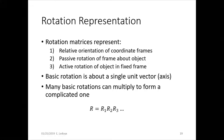Rotation matrices can represent three different things. One is the relative orientation of coordinate frames, so frame 1 with respect to frame 0. Another is passive rotation of a frame around an object — static object, rotate the frame — or active rotation of an object in a fixed frame, meaning the frame is fixed and you rotate the object.